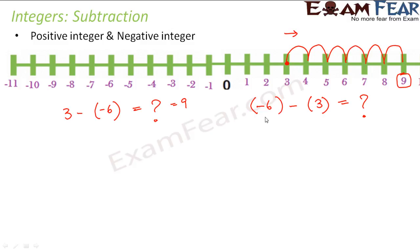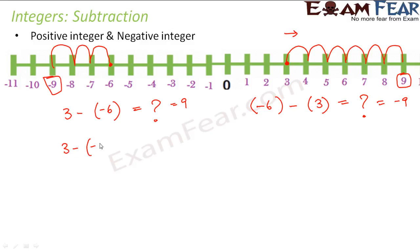In the second case, it is minus 6 minus 3. So you are actually subtracting a positive integer from a negative integer. You are at minus 6 and subtracting a positive integer is not the right thing to do, so you will move towards left — 3 jumps. So 3 jumps towards left, you reach at minus 9. So the result in this case would be minus 9. Alternatively, subtracting minus 6 from 3 is the same as adding the additive inverse of minus 6, which is plus 6. So 3 plus 6 is 9 — you arrive at the same result.